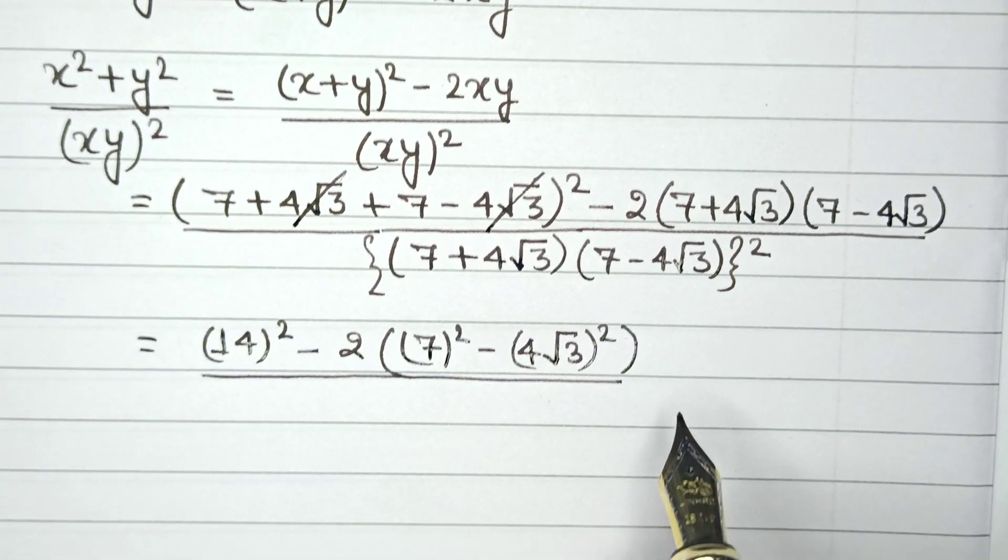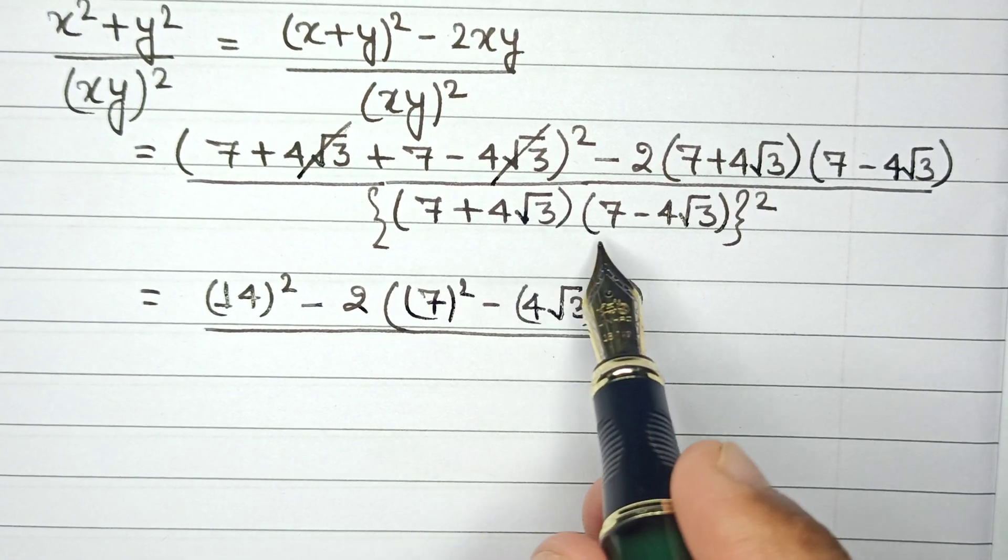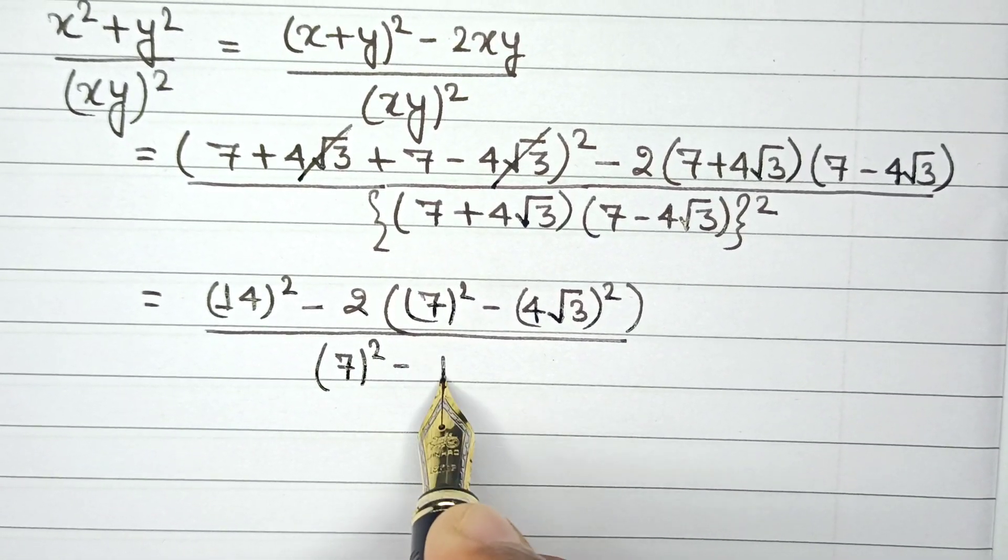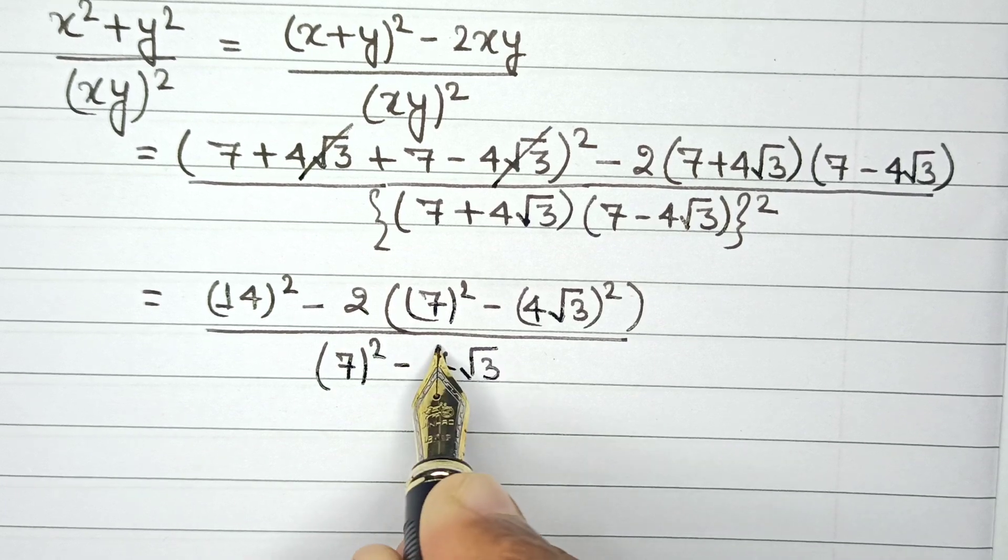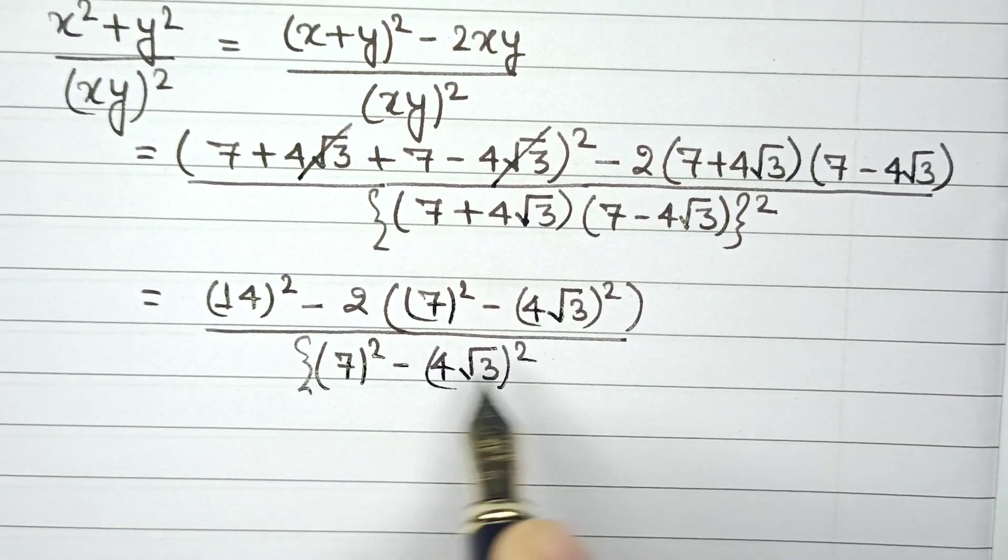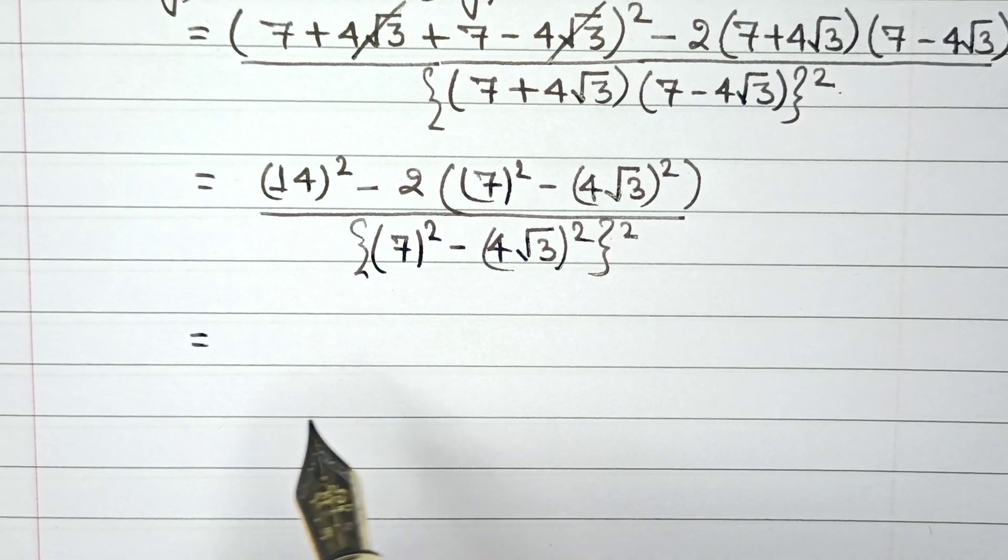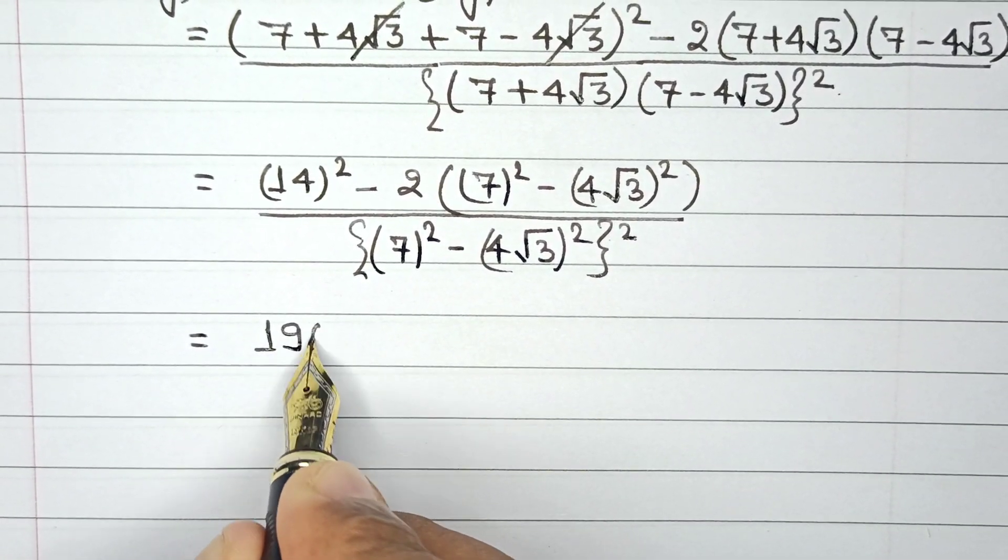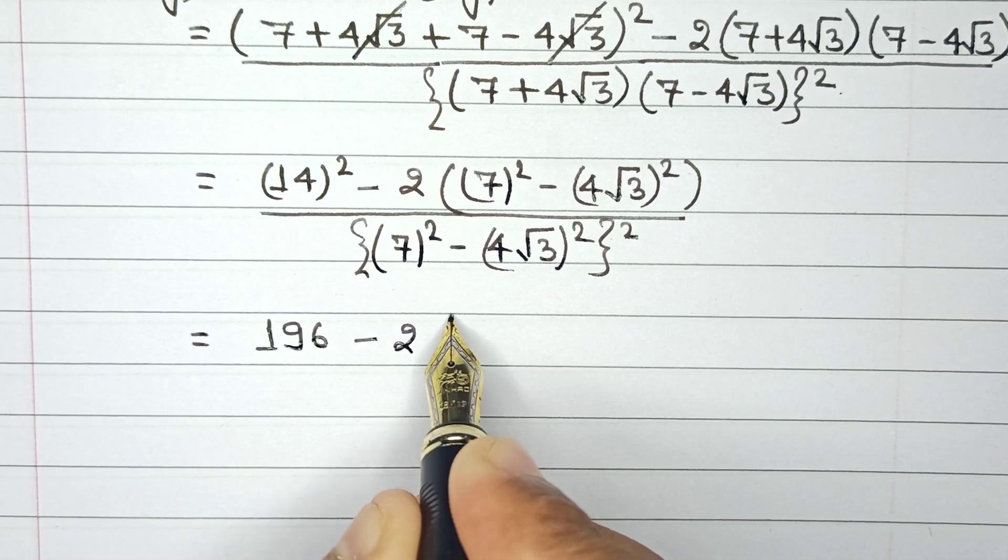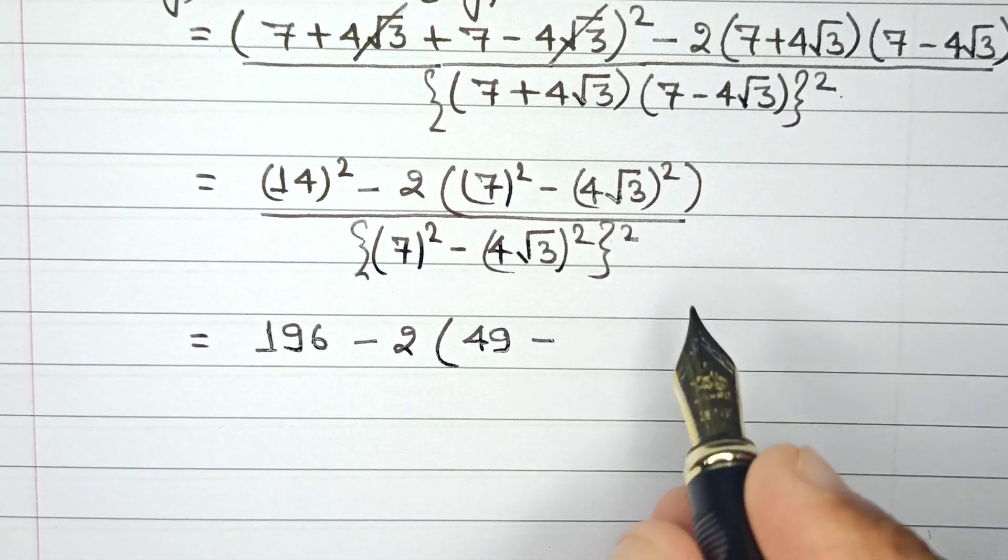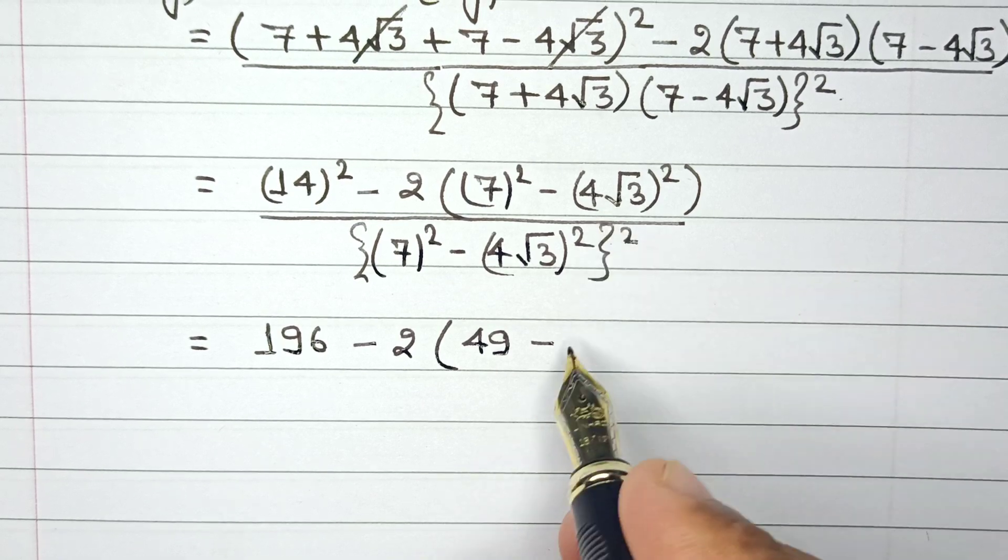I'll write this like this. And in the denominator, we now have a plus b multiplied by a minus b, which is a square minus b square. And then we raise another square, that is this one just right here. So now 14 square has the value of 196 minus 2 times multiplied by 7, 7s are 49 minus this is 48.